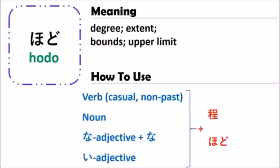Now, how to use it. In Japanese, you will use a verb, noun, or adjective with hodo. When you use a verb with hodo, you can use it in the casual form. For nouns, you just use them as-is, not in a changed form.